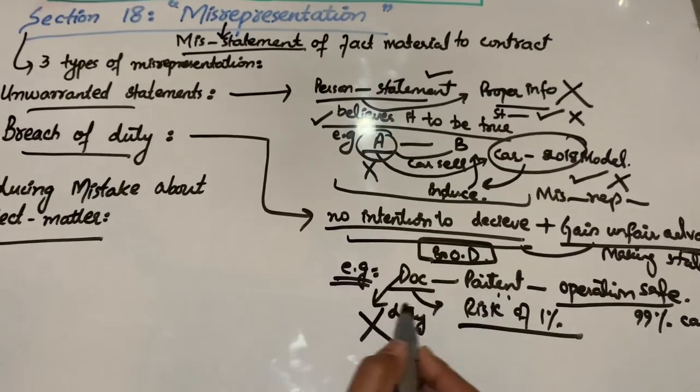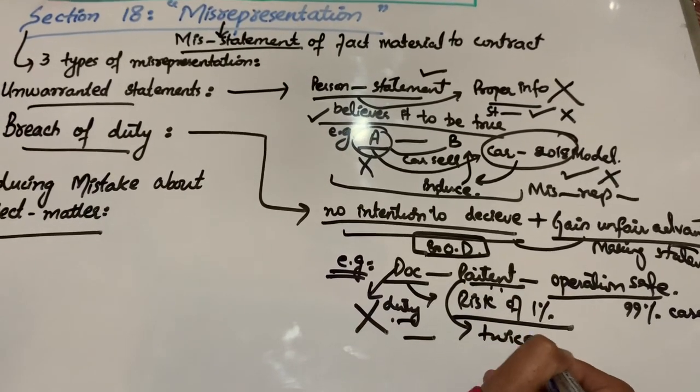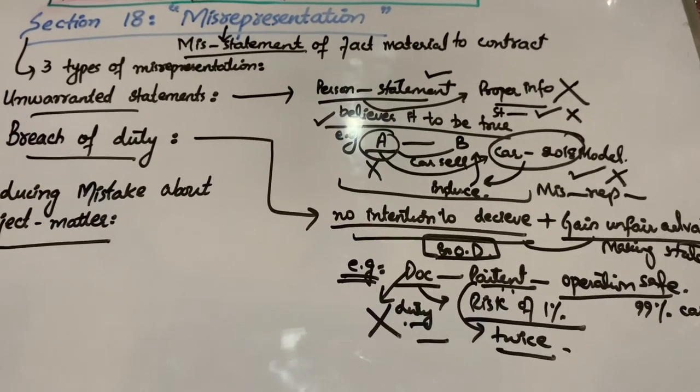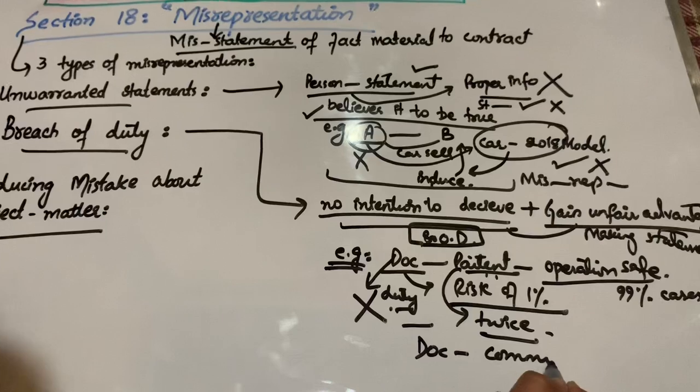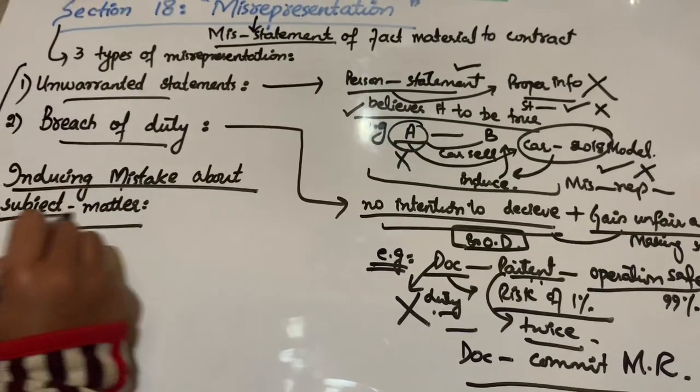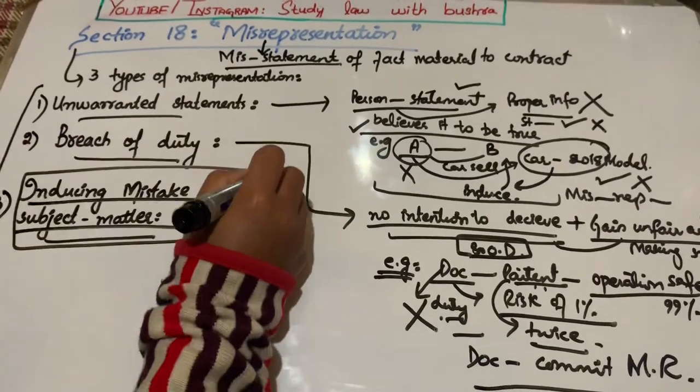اب یہاں doctor کی intention دھوکہ دینا نہیں ہے، لیکن وہ ایک advantage gain کر رہا ہے. جیسے patient نے کئی بار operation کرنے سے پہلے سوچا ہوگا کہ اس میں 1% کا risk ہے. تو یہاں کیا ہوا - doctor نے misrepresentation commit کیا ہے اور patient کی consent free نہیں ہے.